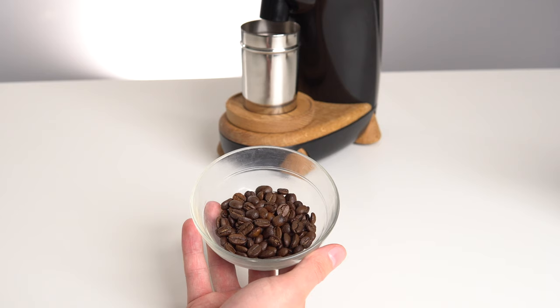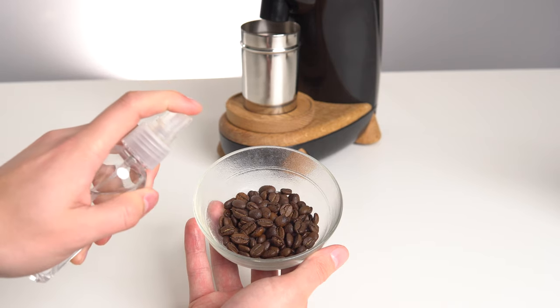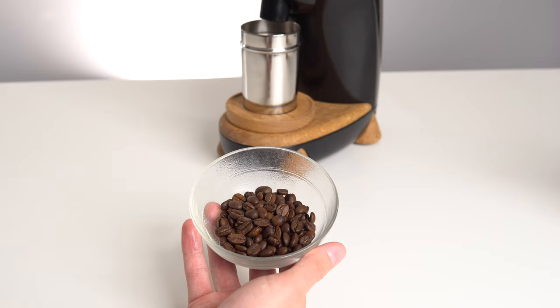Before putting your beans into the grinder, give them one or two sprays of water, and then a light shake or stir to ensure that each bean gets a few droplets.